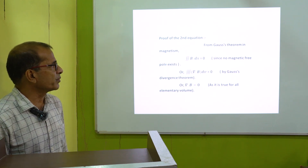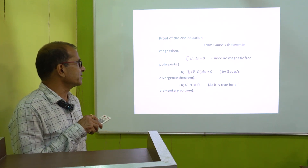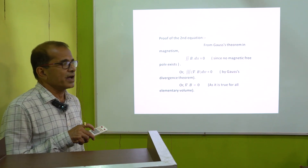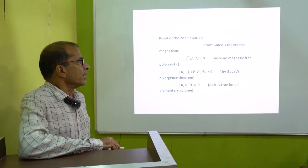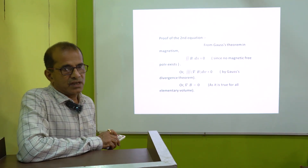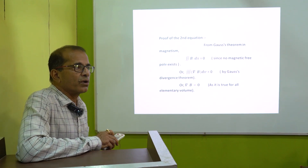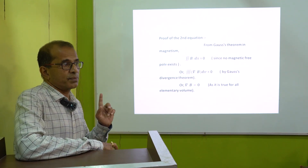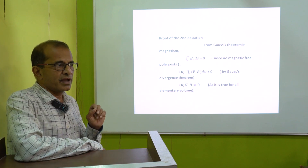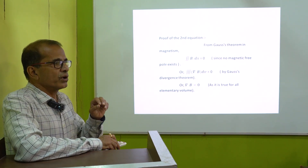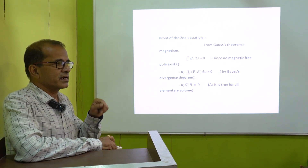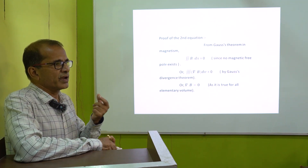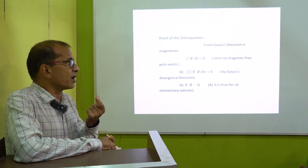Proof of the second equation: from Gauss's theorem, we know surface integral B·dS equal to 0, as no magnetic monopole exists. We know that electricity is the fundamental property, but magnetism is not. Due to electric current, magnetic field is produced, and we get two poles — north and south — simultaneously.